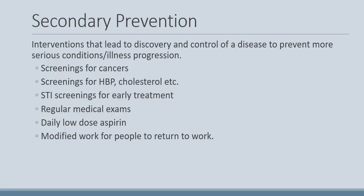The secondary level of prevention involves interventions that hope to discover or control a disease and prevent more serious conditions from progressing. Examples include cancer screenings like mammography, screenings for high blood pressure and cholesterol, STI screenings for early treatment, regular medical exams, a daily dose of aspirin, and modified work for people returning to work. These are all designed to control a disease or prevent it from becoming more serious.